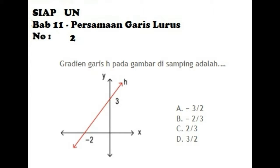Problem 2: Find the gradient of line H in the diagram. Solution: m = (y2 - y1)/(x2 - x1) = (3 - 0)/(0 + 2) = 3/2. The answer is D.